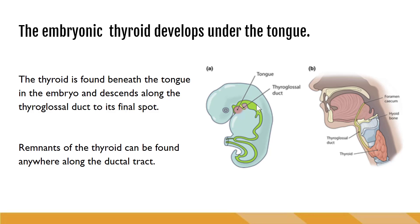In image A, we can see where the tongue is and the thyroglossal duct on the embryo. Image B shows us again where the tongue is and how the thyroglossal duct is related to the position of the tongue and the position of the thyroid in its final spot in the neck. Ectopic tissue can be anywhere along this duct, and sometimes we'll see fluid fill within this duct as well — that's a thyroglossal duct cyst.